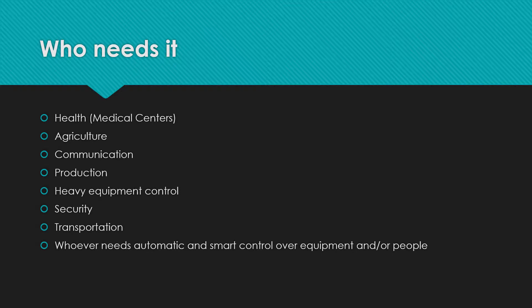Who may need it? Health organizations like medical centers or other emergency organizations, agricultural organizations, communication companies, production lines, and whoever needs heavy equipment control. Security organizations like military, police, and so on. Transportation organizations like airlines, railways, and bus companies — and in general, whoever needs automatic and smart control over equipment and people.